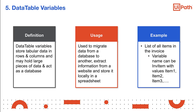Data table variables can store tabular data in rows and columns and may hold a large amount of information and act as a database. The practical usage of data tables is to store big pieces of information and do certain operations on it, such as filtering, searching, copying, and so on. They are often used to migrate data from a database to another, extract information from a website, and store it locally in a spreadsheet.